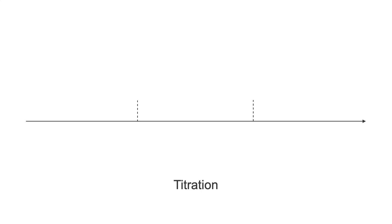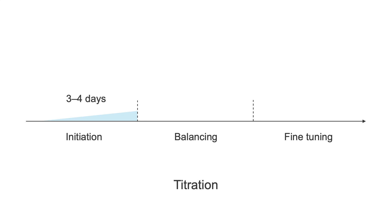The titration for apomorphine can be divided into three phases: the initiation phase, balancing phase, and fine-tuning. The initiation phase lasts about three to four days. During this phase, apomorphine is started on a low dose, then gradually increased while tapering other medications, including dopamine agonists, anticholinergic medications, amantadine, and COMT inhibitors.